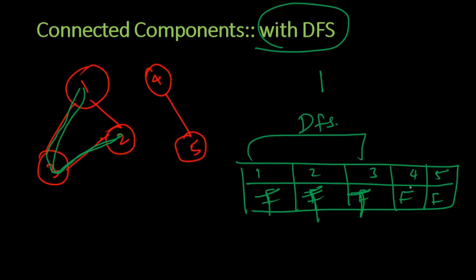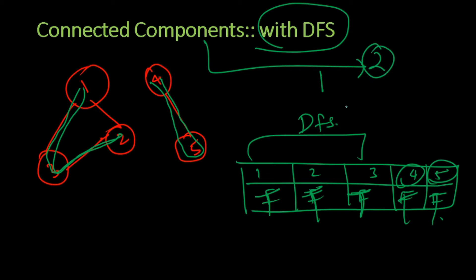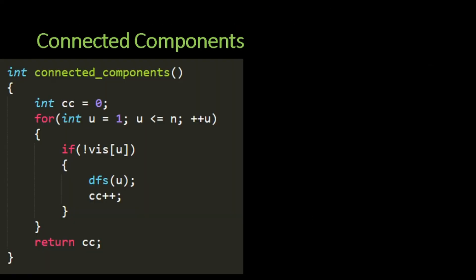Are there any other elements in the visited array that are unvisited? Yes — 4 and 5 are unvisited. So we pick 4 and again do a DFS. When we do a DFS from 4 we get to 5, and in the process both are marked as visited. So we know the number of connected components is 2, and the two components are {1, 2, 3} and {4, 5}.